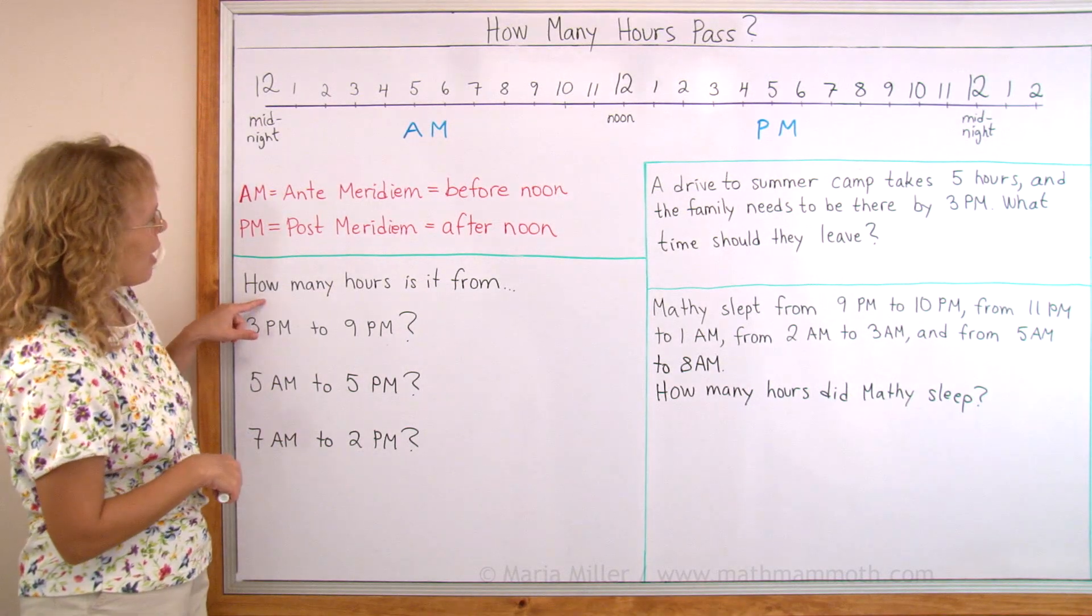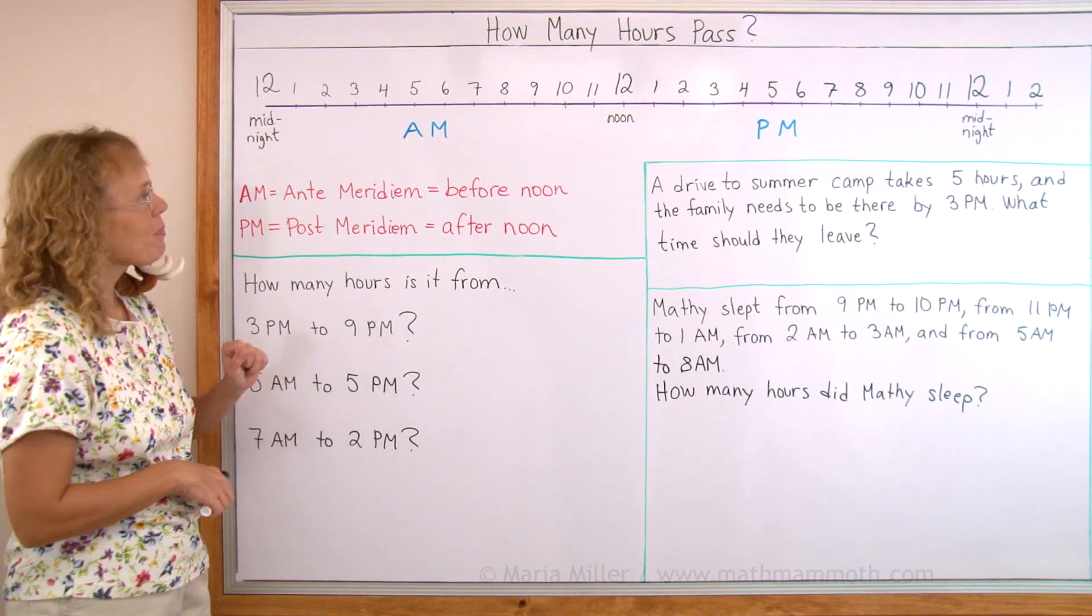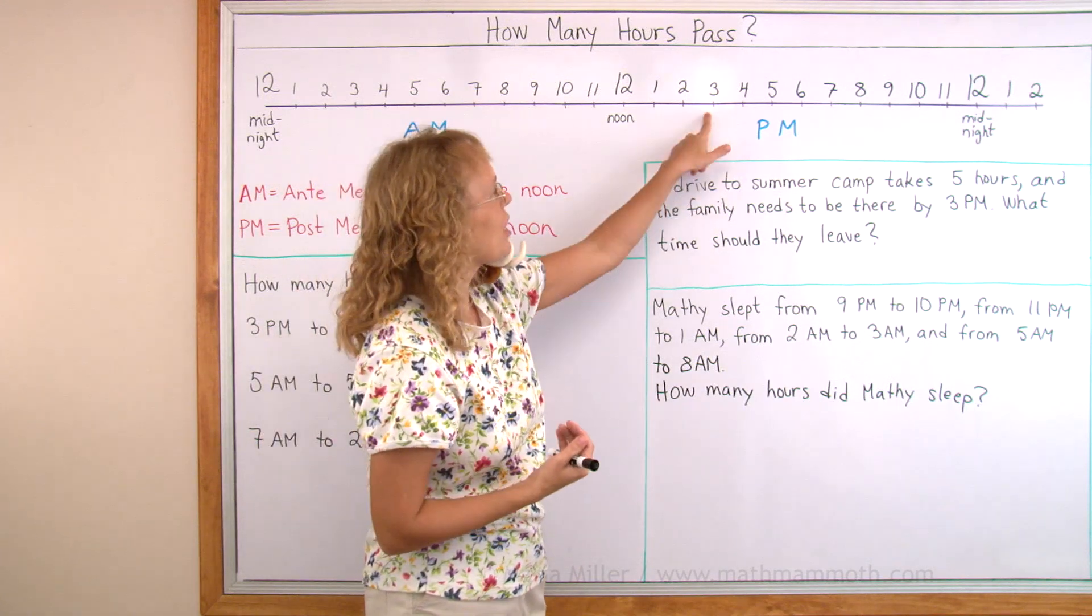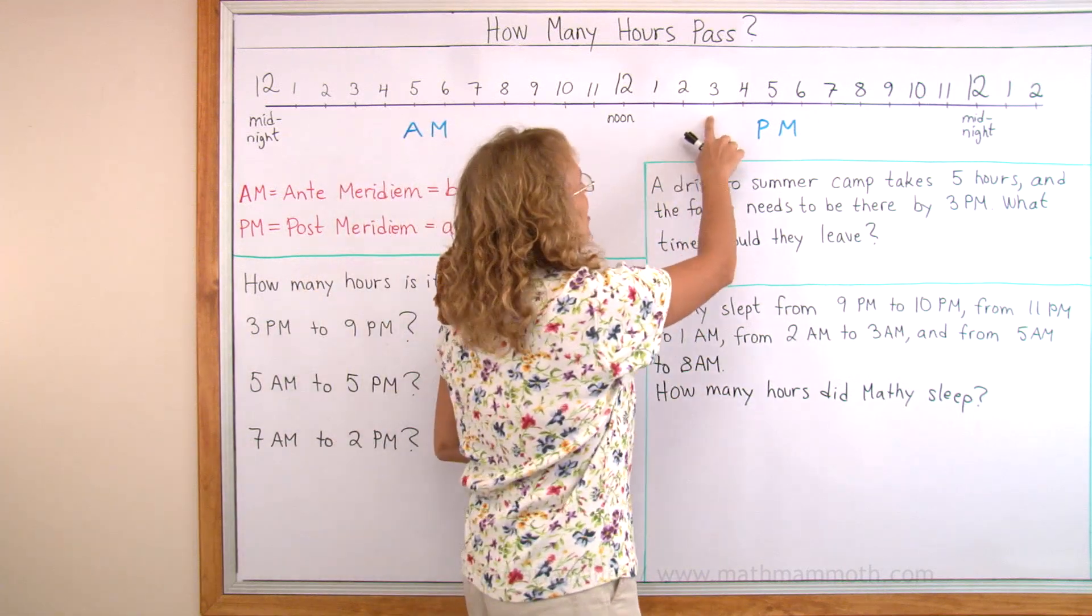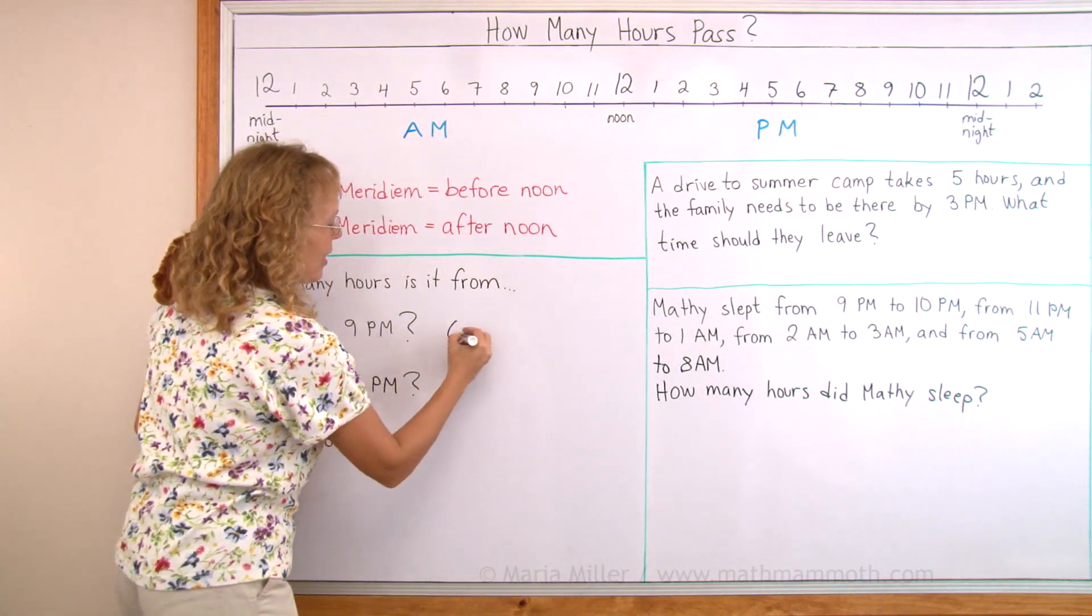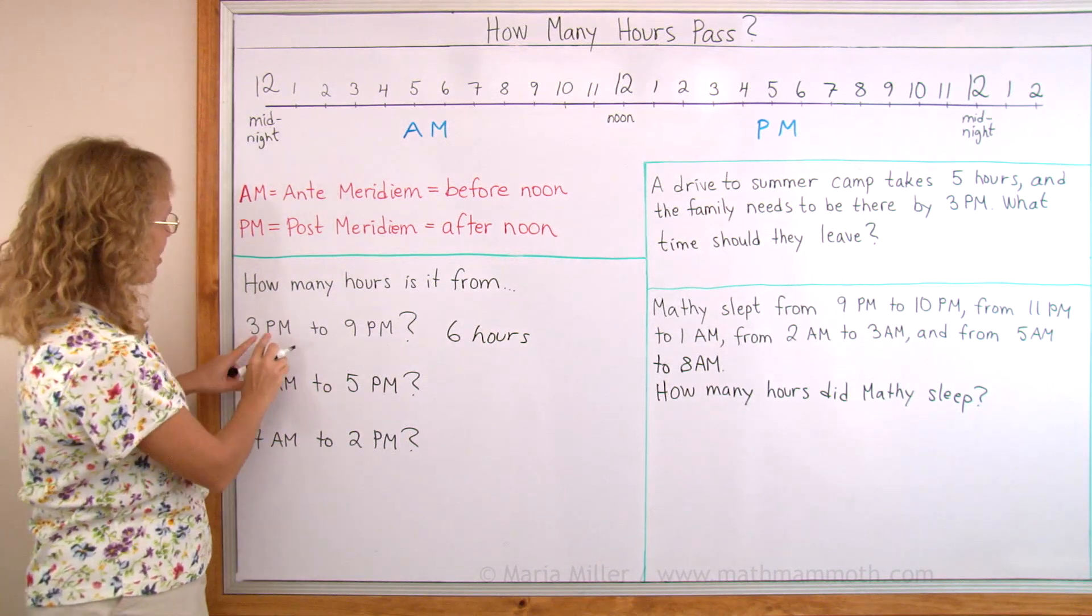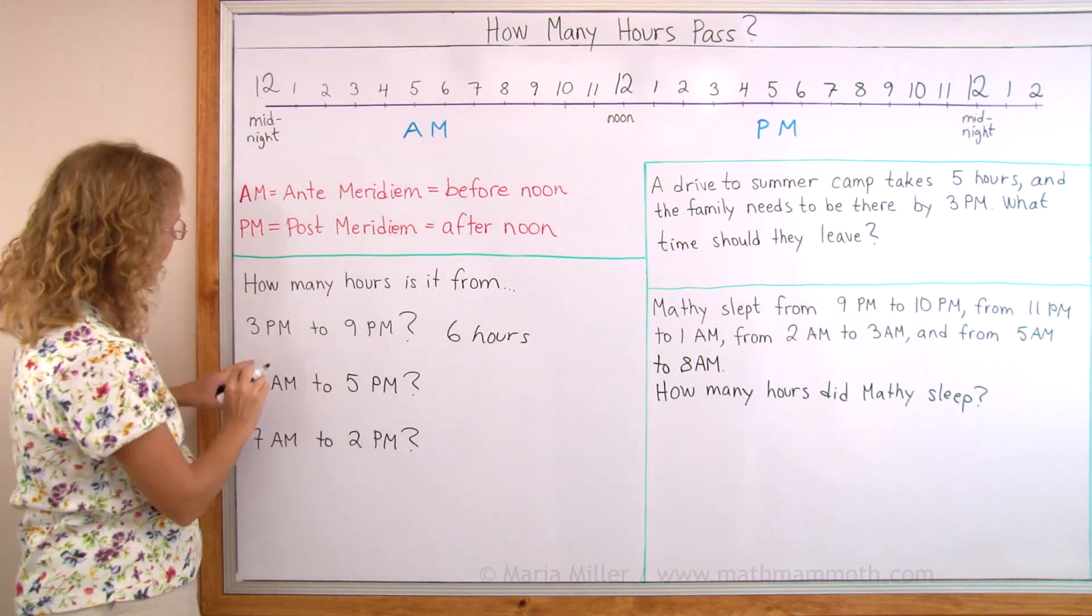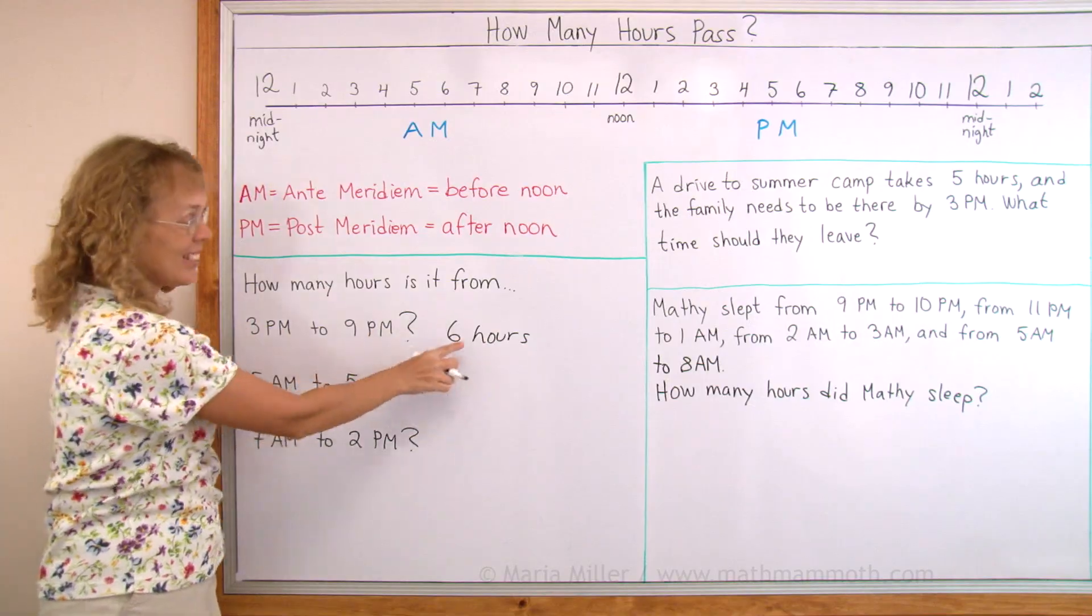Now let's see how many hours is it from 3 PM till 9 PM. We could use this timeline. We could find 3 PM and 9 PM and then count. From 3 PM we could count like 1, 2, 3, 4, 5, 6 hours. But of course there's an easier way. Since both of them are PM times, they are on the same timeline, we could just subtract 9 minus 3. Think of the difference between 3 and 9. It is 6.